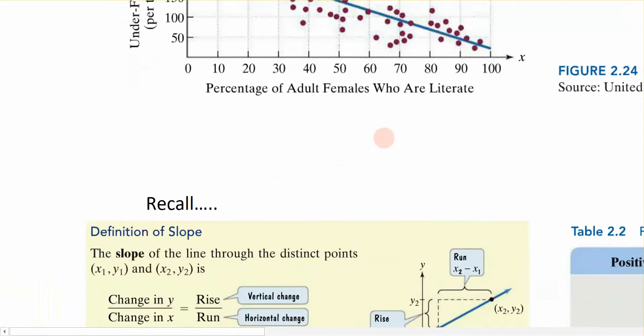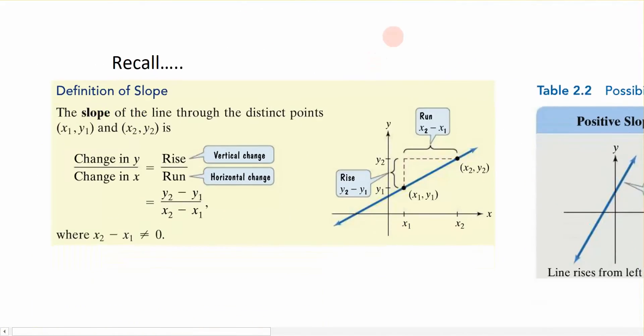So before we talk about scatter plots, we want to remember some certain things about slope. So slope is defined as the change in y's over the change in x's. Now, when we plot slope, remember that that's going to be the rise over the run. So we rise in the y direction, and we run in the x direction. We have a vertical change, of course, in the y direction, and we have a horizontal change in the x direction. So mathematically, we have the formula that you see right here. So slope is defined as y2 minus y1 divided by x2 minus x1.